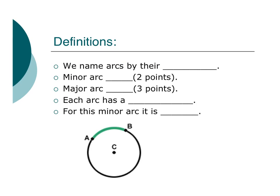A couple quick basics first. We name arcs by their points. A minor arc has two points, so we'll say arc AB. And we put like a little curvy thing over it. Not like a segment line, but a curvy type of line.